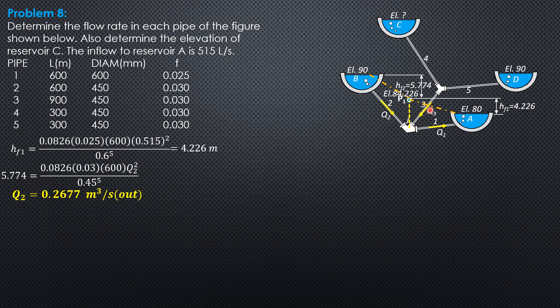From the figure, Q2 plus Q3 equals Q1, 0.2677 plus Q3 equals 0.515. So Q3 is equal to 0.2473 cubic meter per second.